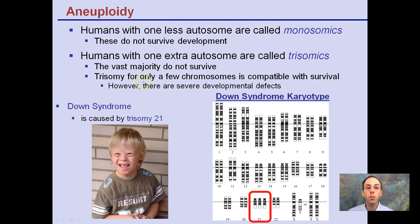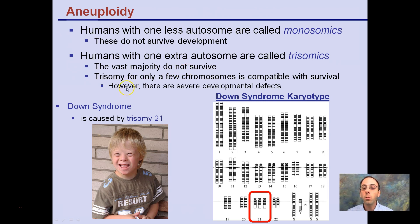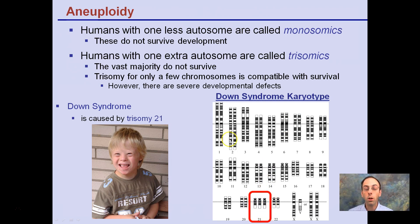An example of this could be Down syndrome. Humans with one less autosome are called monosomics, and these do not survive development. If there's an extra autosome, it's called trisomics. The vast majority of these don't survive either, but trisomy for a few chromosomes is compatible with survival, though with severe developmental defects — Down syndrome being one example. Trisomy 21, as shown here, has three copies under chromosome 21 instead of two, which is the karyotype for Down syndrome.